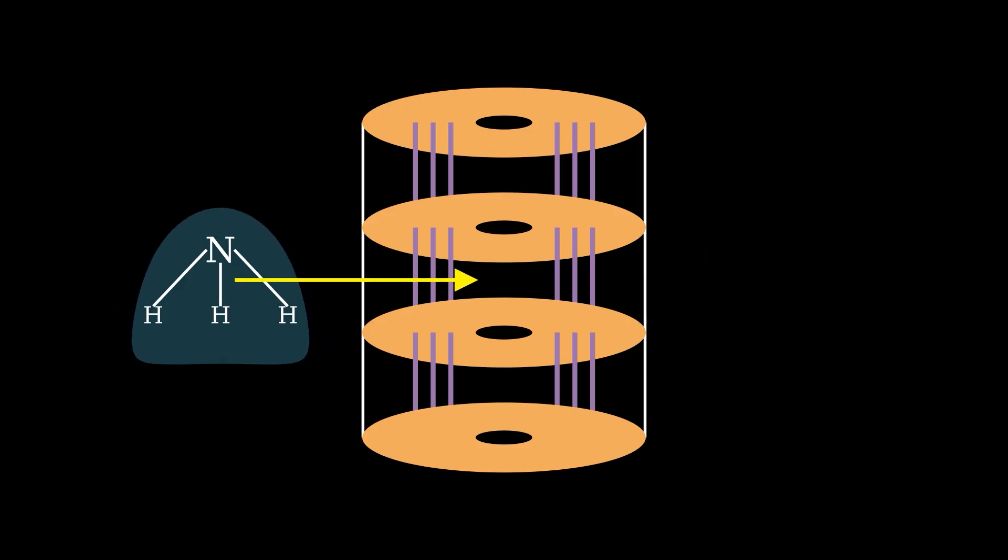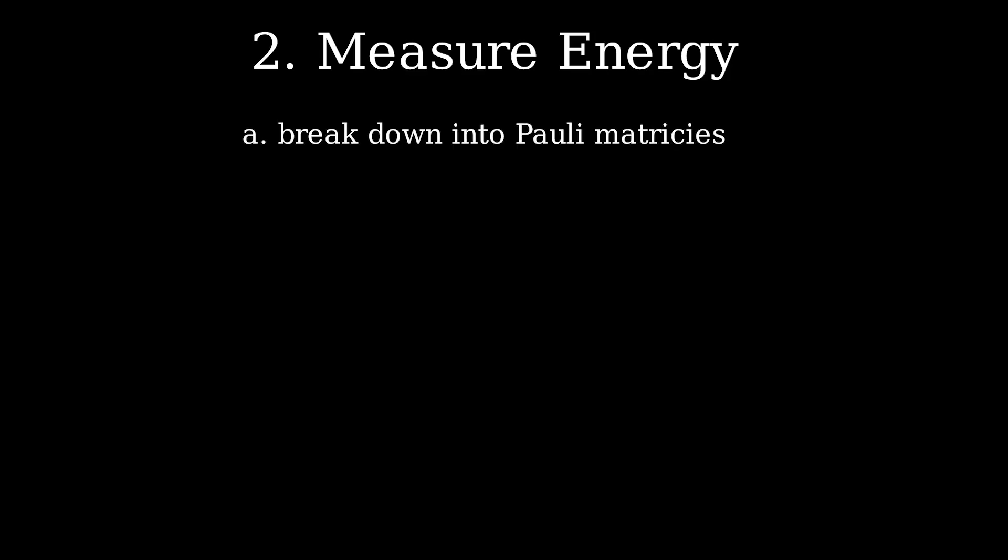Okay, since step two is the part that we actually need to do on a quantum computer, let's zoom into that now to see how we actually do this. There are three total steps within step two. First, we have to break down the molecule's geometry into a string of Pauli matrices. When we input a molecular geometry, what we actually get is something known as the Hamiltonian. The Hamiltonian for a molecule is a mathematical object, specifically a matrix, which describes the kinetic and potential energy of the system.